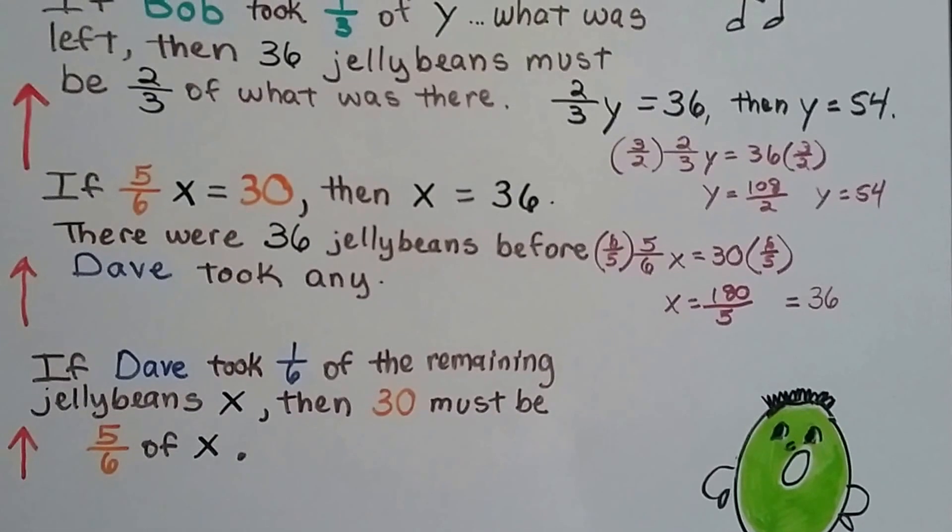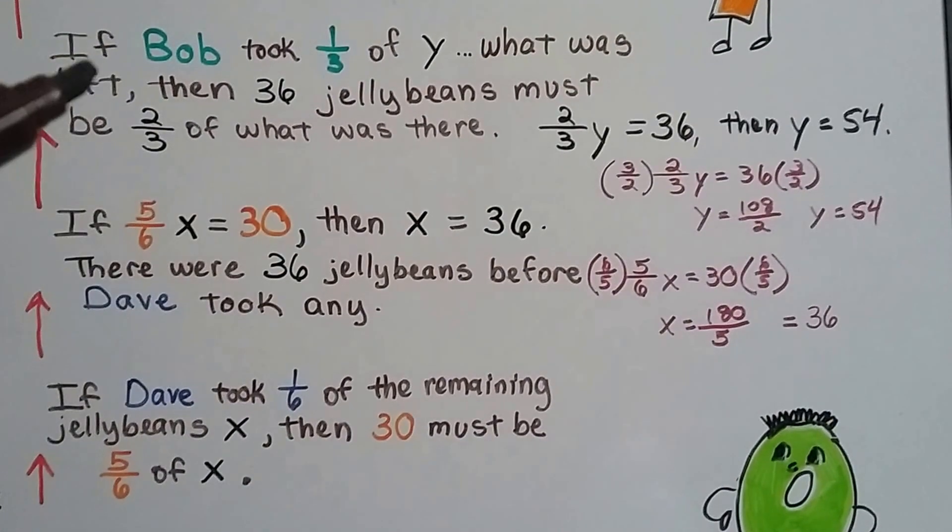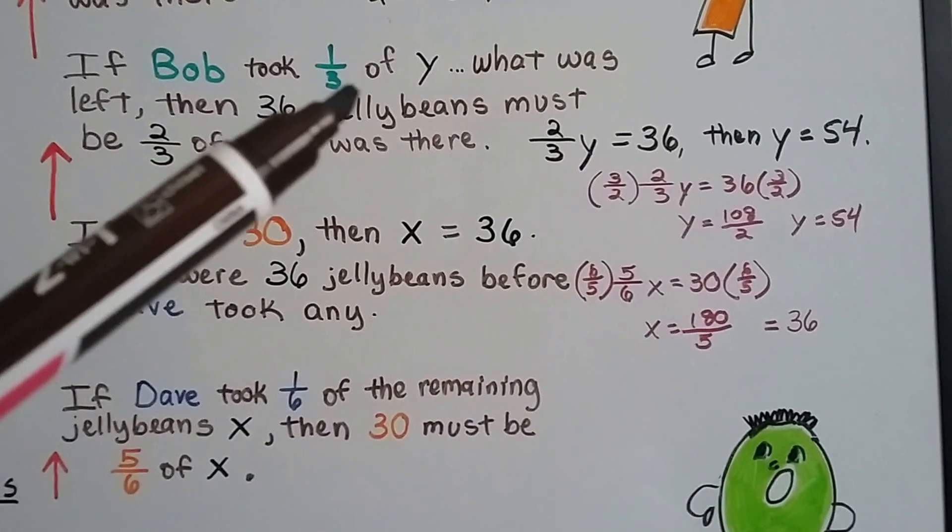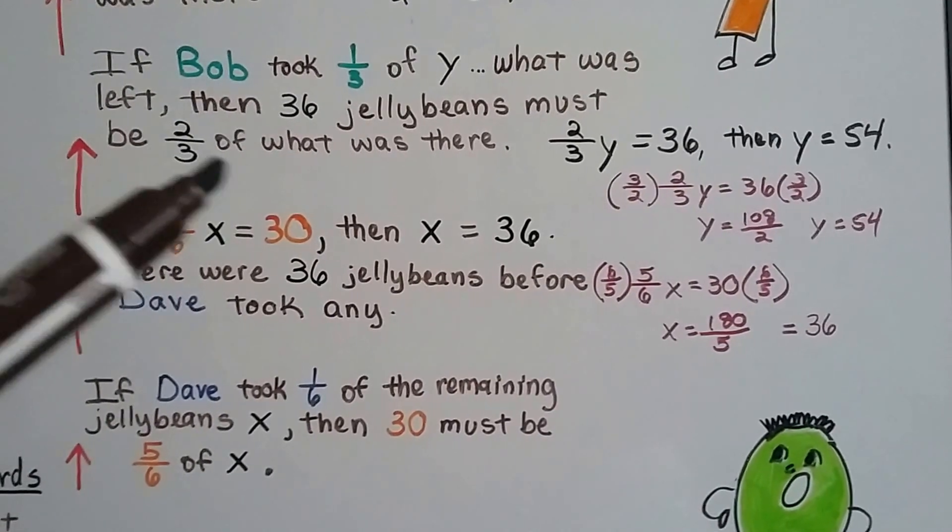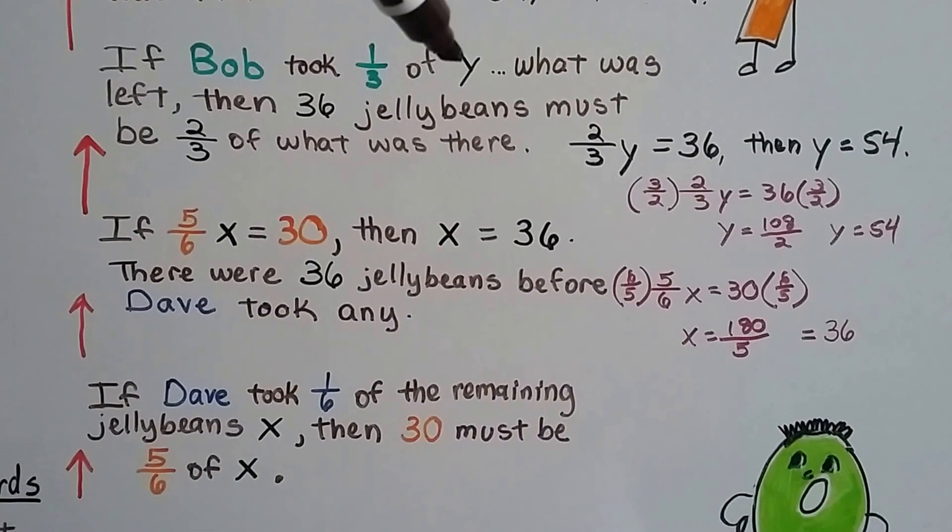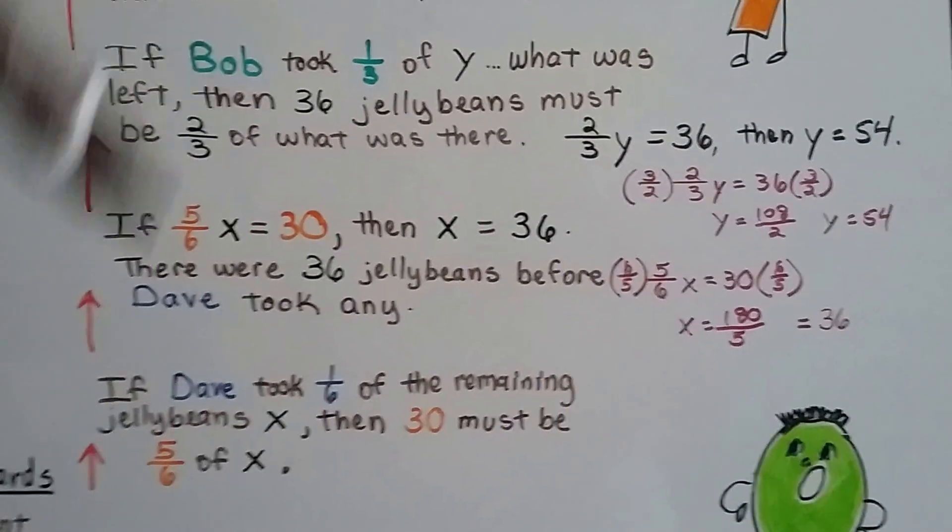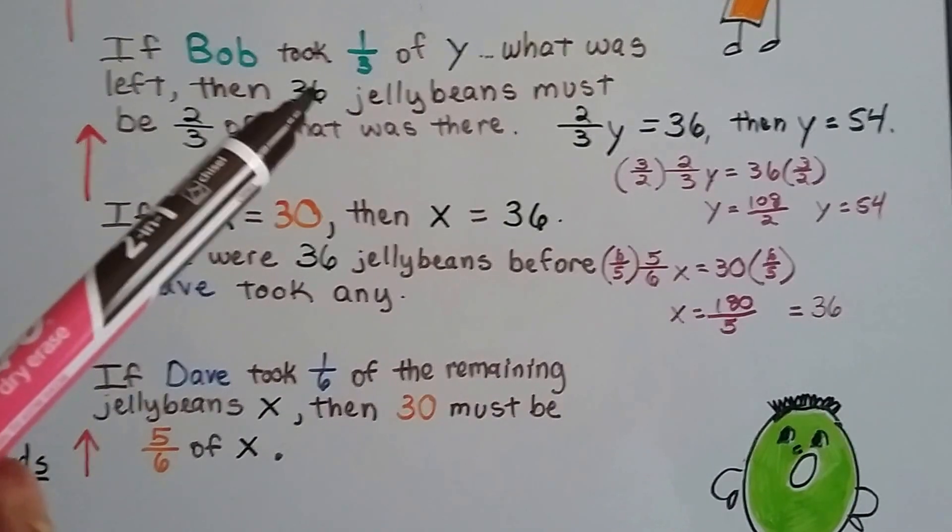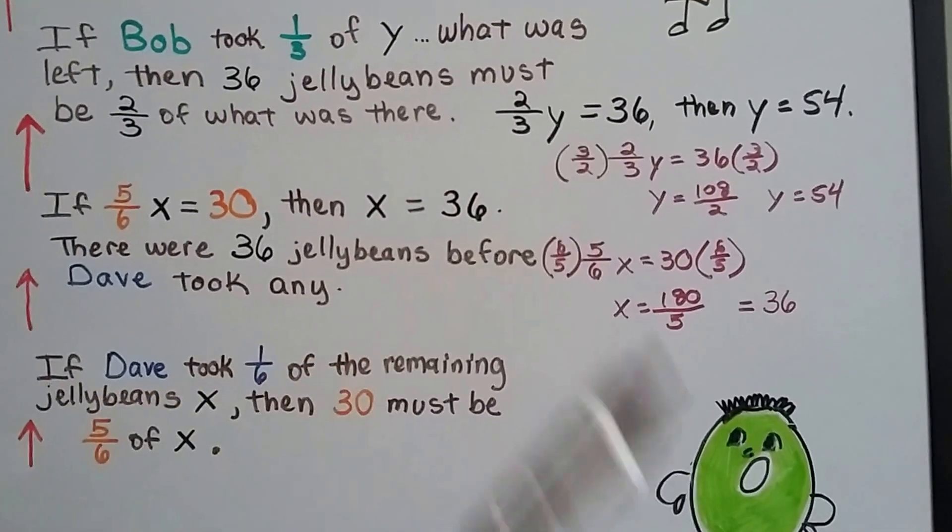So if X equals thirty-six, and Bob took one-third of Y, the amount before he took the one-third, then thirty-six jelly beans must be two-thirds of what was there. So there was an amount of jelly beans, Y is going to represent that amount. Bob took one-third and that left thirty-six. If what was left was thirty-six after he took a third, then this must be two-thirds. The thirty-six must be two-thirds. So that means two-thirds Y equals thirty-six.